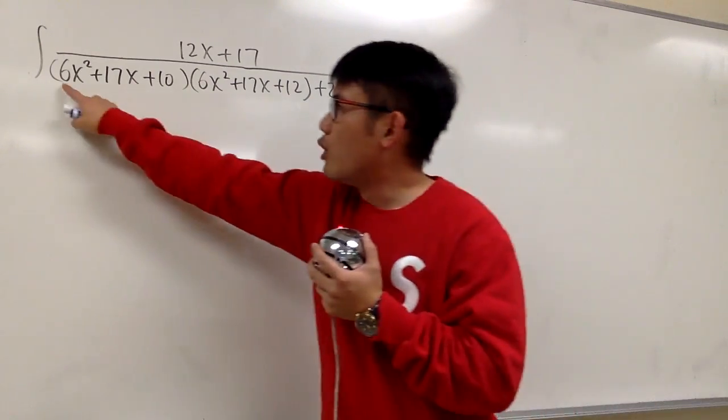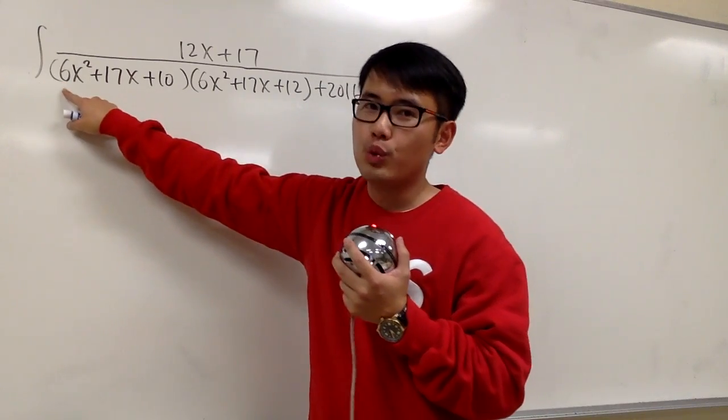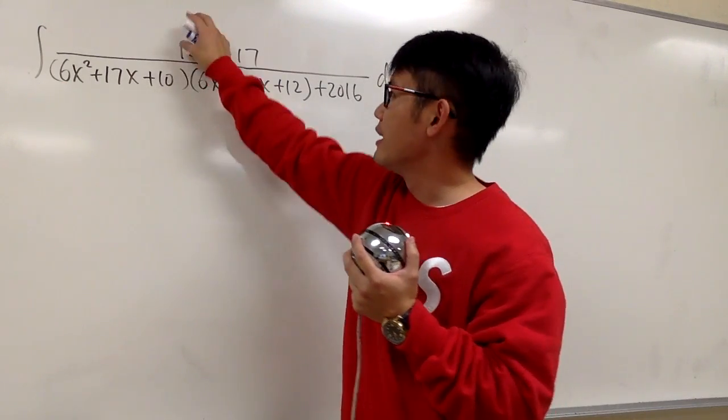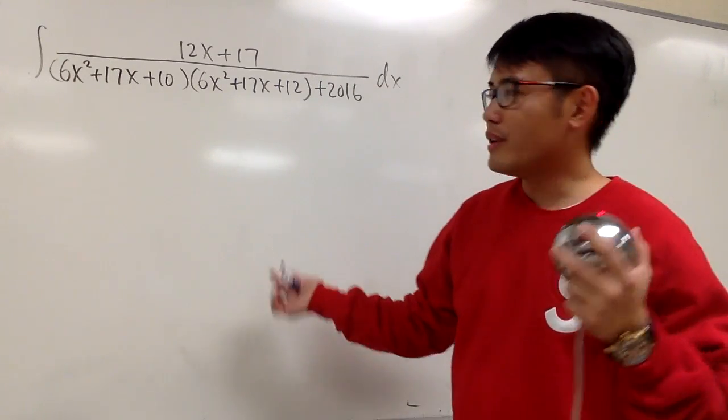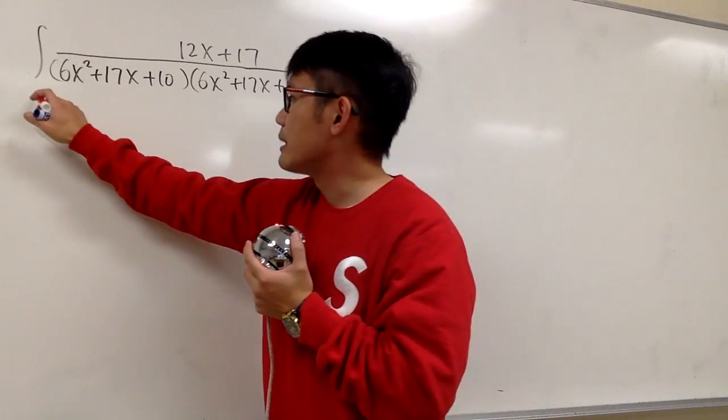But if you notice, the derivative of this is exactly 12x plus 17, and that matches the top, right? The derivative of 10 is 0, so it doesn't matter. So you may be wondering, okay, let's go ahead and use the u-substitution.